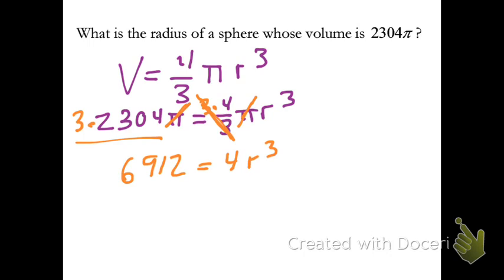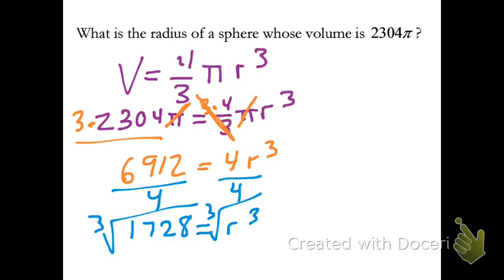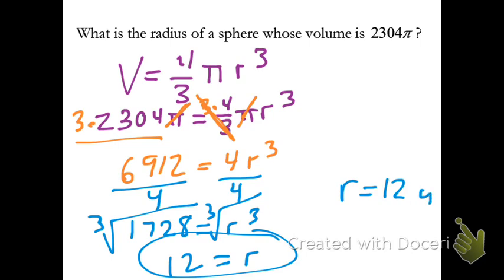Then we could divide both sides by 4 and get Fetty Wap's second favorite number, 1728. And then take the cube root of both sides, and the cube root of 1728 is 12, and that equals r. And that's our radius. And the radius would just be in units because it's a length.